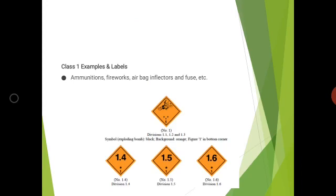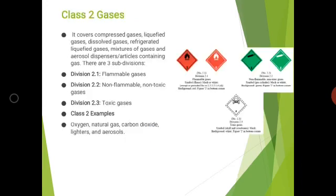The next category is class 2, which includes gases — covering compressed gas, liquefied gas, etc. It is also categorized into divisions 2.1, 2.2, and 2.3. Various examples are oxygen, natural gas, carbon dioxide, and aerosols. Each of divisions 2.1, 2.2, and 2.3 has its own symbol.